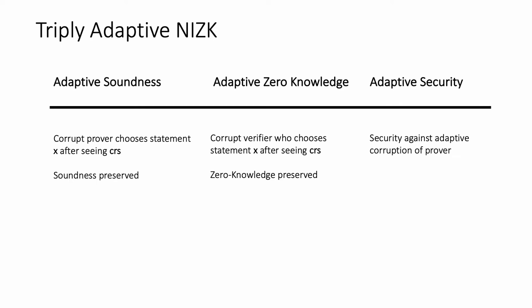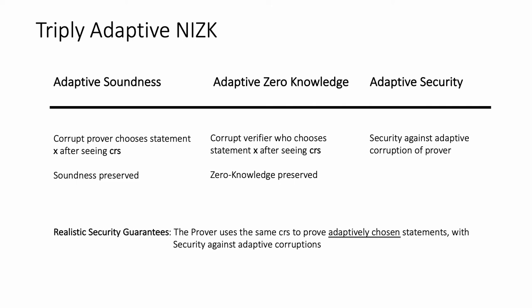We define the notion of triply adaptive NIZK: we require the NIZK protocol to have all three properties — adaptive soundness, adaptive zero-knowledge, and adaptive security. This kind of triply adaptive NIZK provides realistic security guarantees because the prover uses the same CRS to prove adaptively chosen statements, and it also provides security against adaptive corruption. This is very useful in real-life applications where a party can get corrupted after some point in time. Finally, we require UC security so that the same trusted CRS is reused for multiple sessions between different parties, and you can also compose your NIZK protocol inside your favorite MPC protocol.